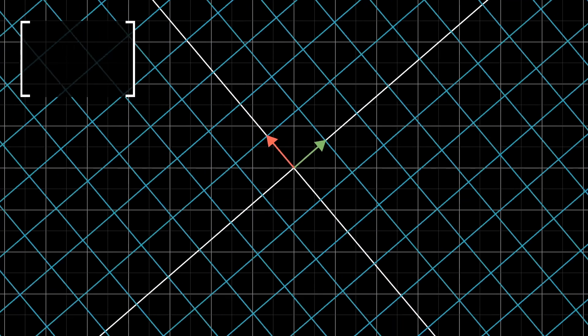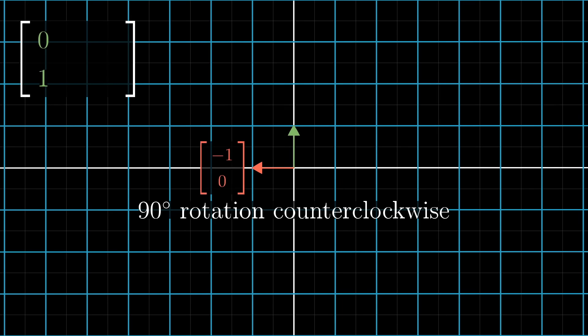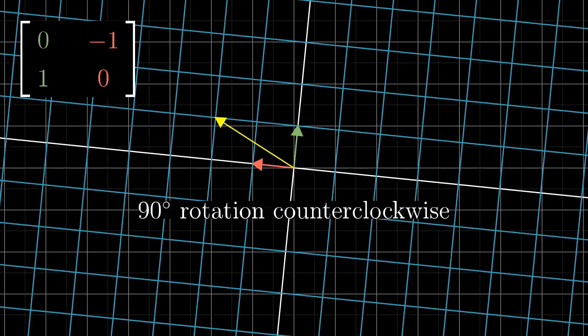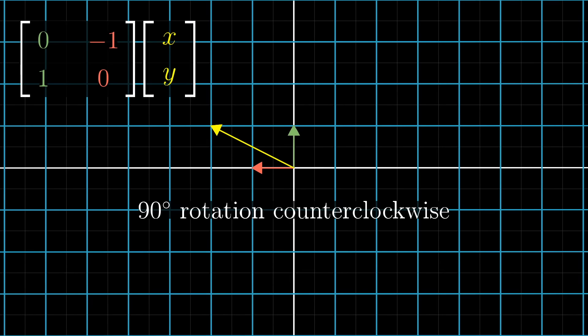Let's practice describing a few linear transformations with matrices. For example, if we rotate all of space 90 degrees counterclockwise, then i-hat lands on the coordinates (0, 1), and j-hat lands on the coordinates (-1, 0), so the matrix we end up with has columns (0, 1) and (-1, 0). To figure out what happens to any vector after a 90-degree rotation, you could just multiply its coordinates by this matrix.